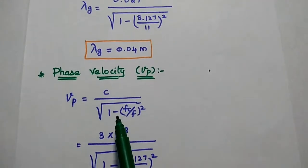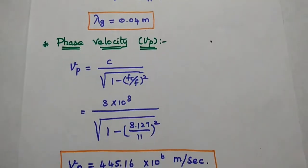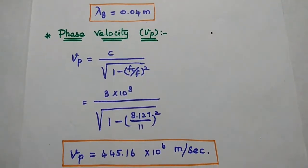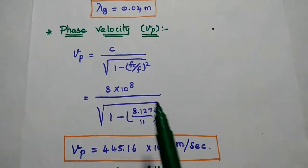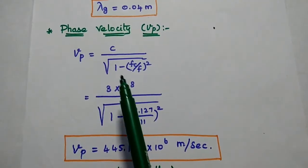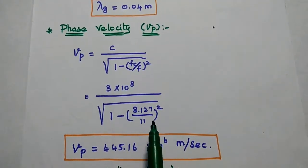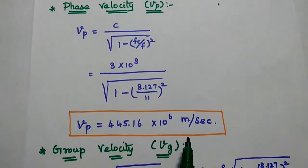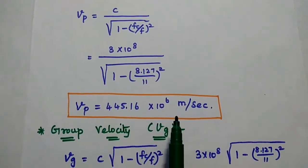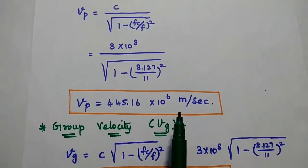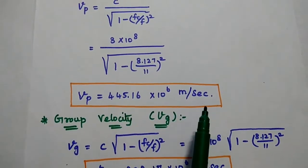Next, the phase velocity v_p = c / sqrt(1 − (f_c/f)²). Substituting c = 3×10⁸, f_c = 8.127 GHz, and f = 11 GHz, we get v_p = 445.16×10⁶ meters per second.